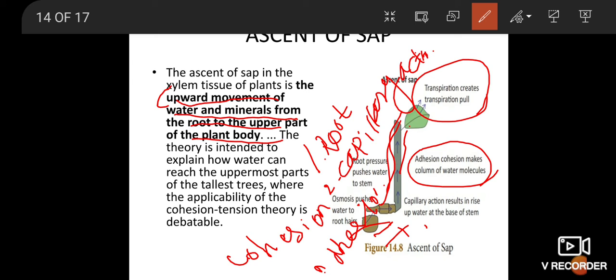Adhesion: the force of attraction between molecules of different substances is called adhesion. Cohesion: the force of attraction between molecules of water is called cohesion. Transpiration pull creates a suction through stomata, which sucks the water column from the xylem tubes. Thus, water is able to rise to great heights even in the tallest plants.